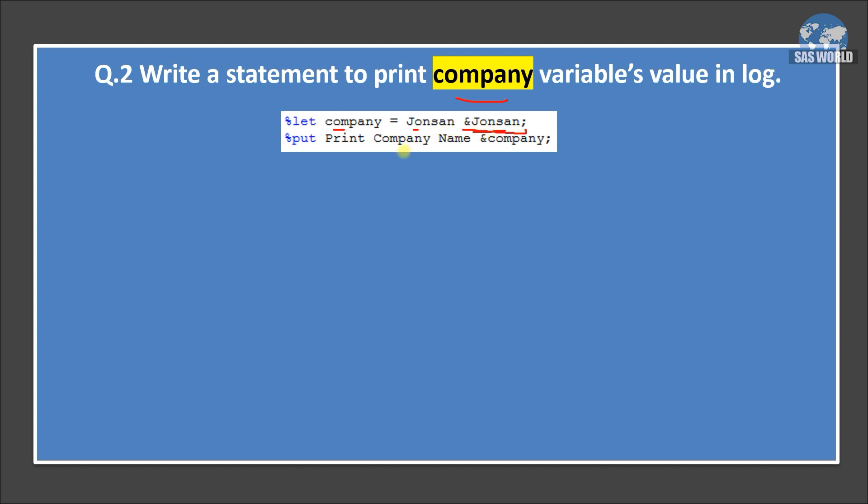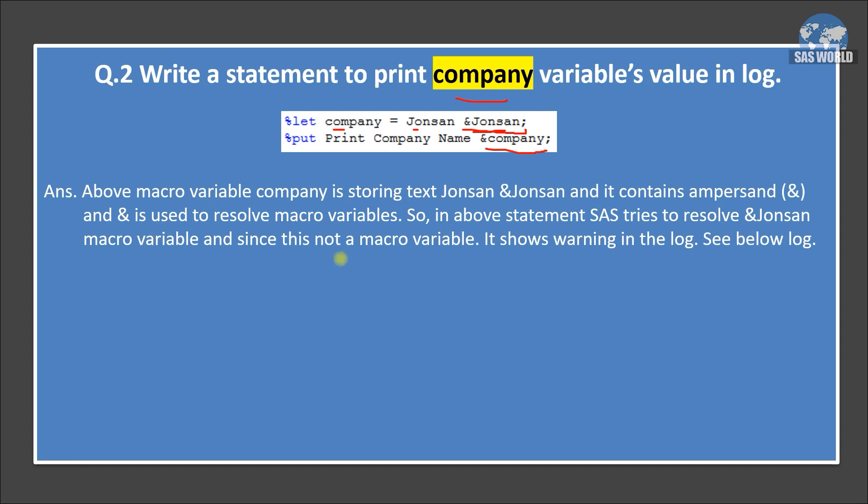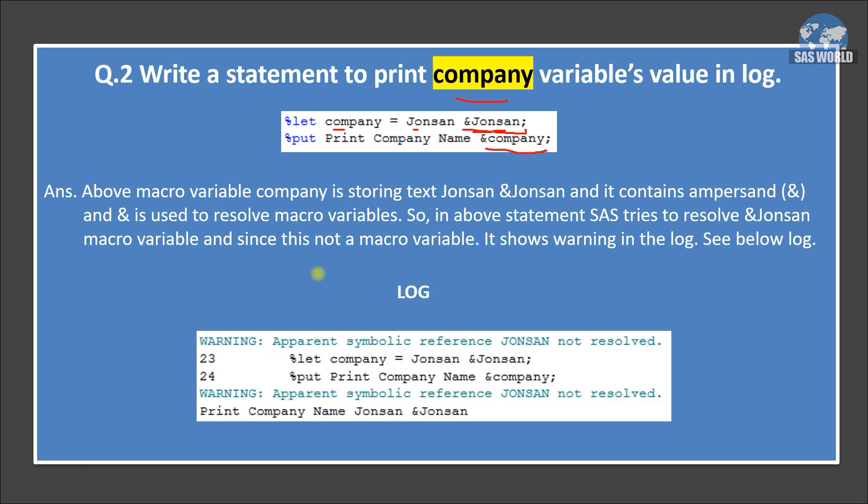And this is the problem because Johnson is not a macro variable. We are just writing the name of the company. So it will give warnings in the log. And then we are using print company name and printing this macro variable company. So this is the same that I have explained. Let's see the log. So in the log, you can see we have two warnings. These are our statements. And here we have a warning like Johnson not resolved. So SAS macro processor is trying to resolve this value, but this is not a macro variable.